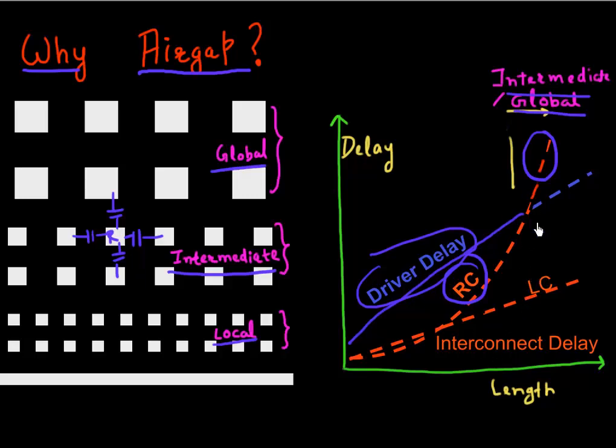So it turns out that this RC delay is the dominant delay for intermediate and global wires. If your interconnect length exceeds a certain critical length, then this RC delay becomes the most dominant component limiting your microprocessor performance or latency. So, wouldn't it be nice if we could somehow reduce this capacitance in this RC term?